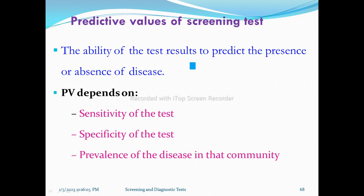Example: positive predictive value — the probability of a person who has the disease, if the test result is positive. The test result is positive.